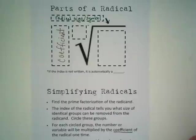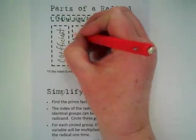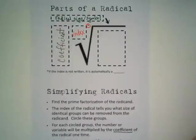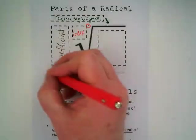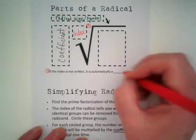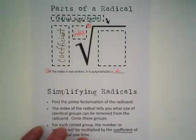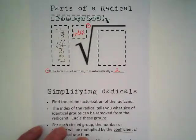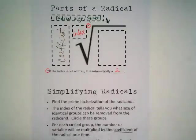I referenced this word yesterday when I was showing you that sometimes we have numbers other than an invisible two. When there is a small number here, it is the index. Notice this little star here - it goes to this asterisk down here. If the index is not written, it is automatically a two. And remember, the index is directly related to a power when we've got a base and a power. Take that color and go see if you see the word index in the directions.